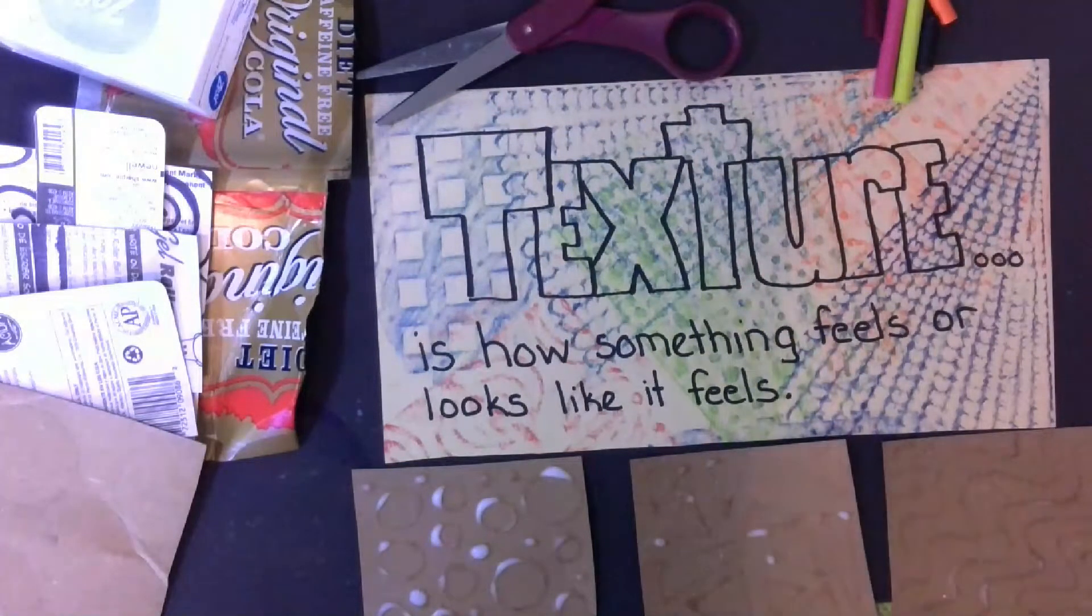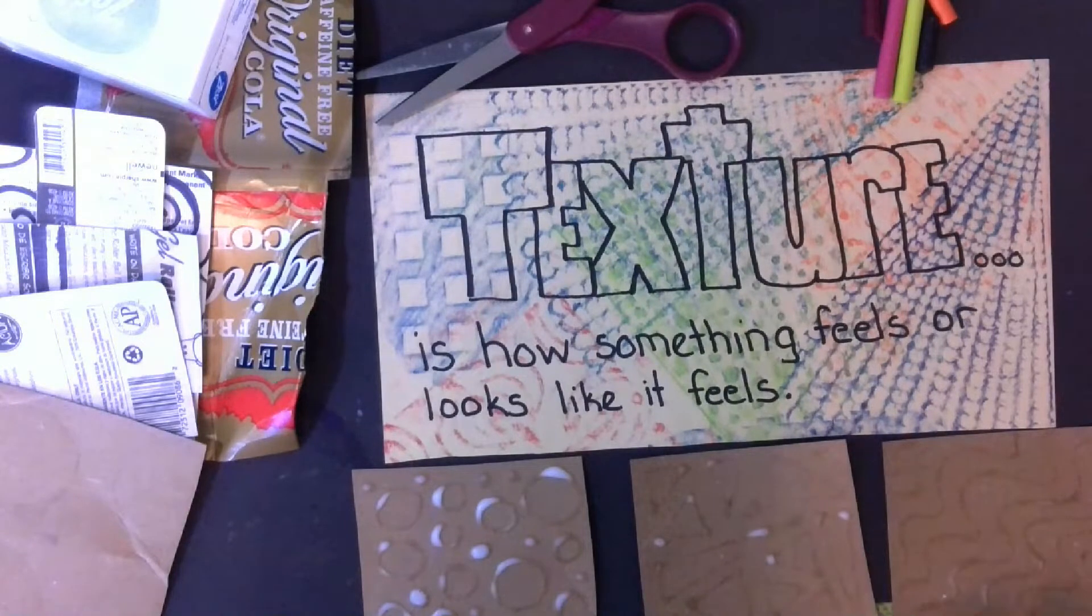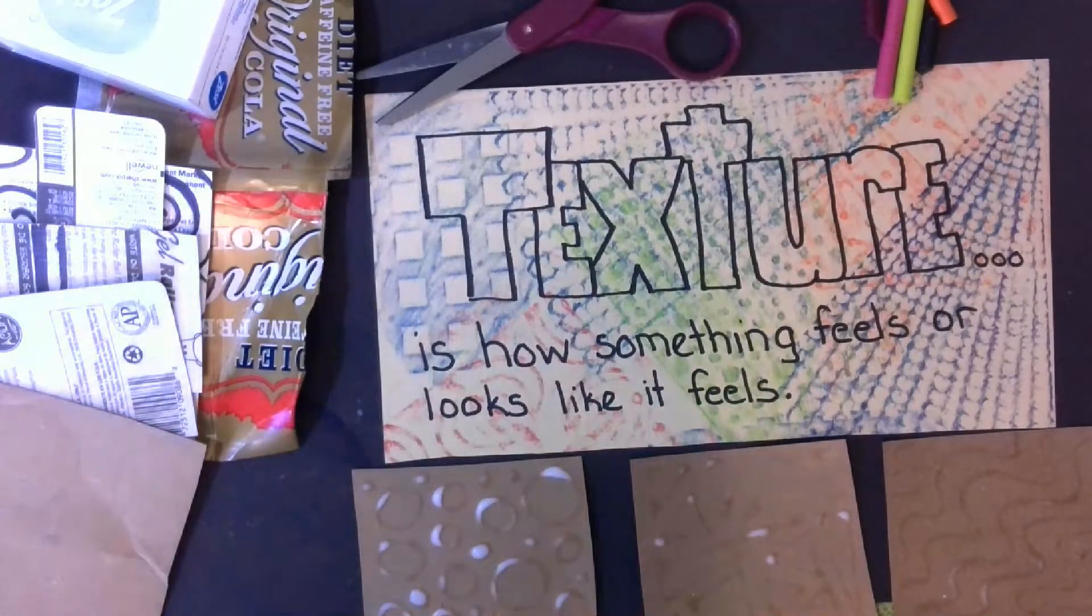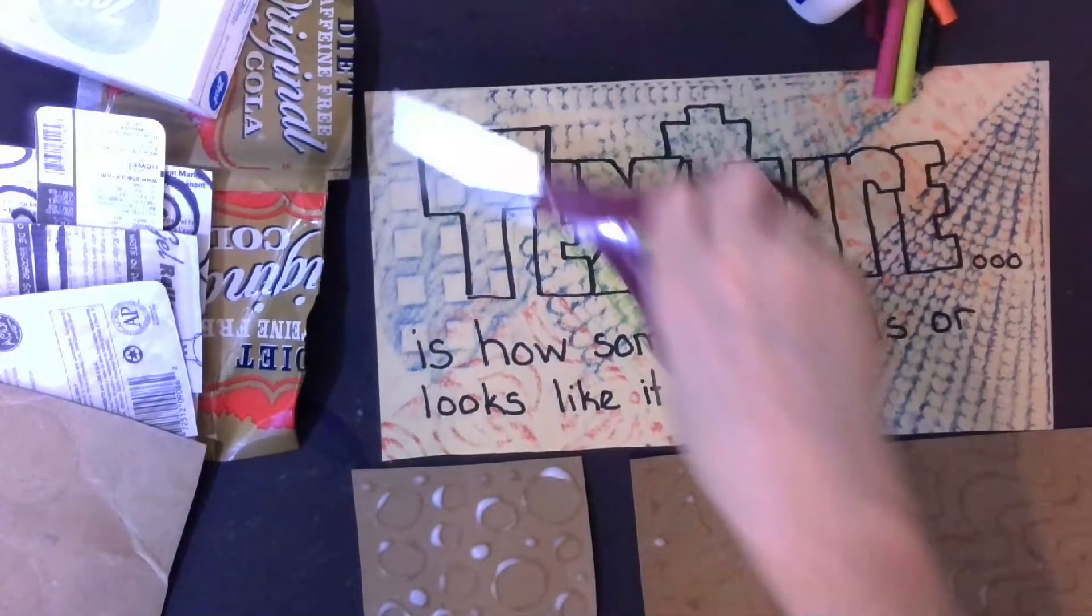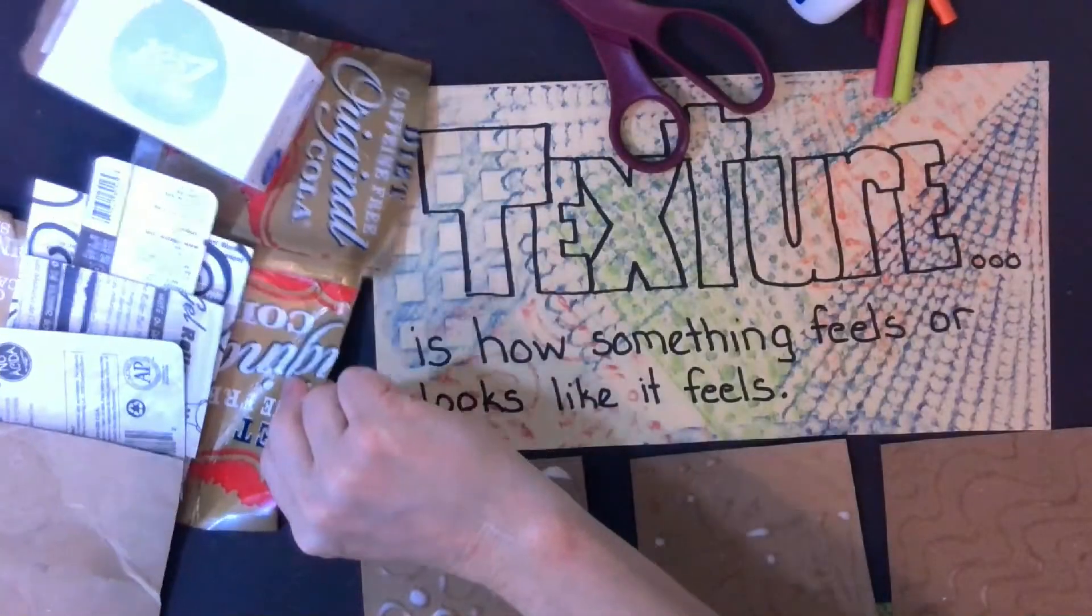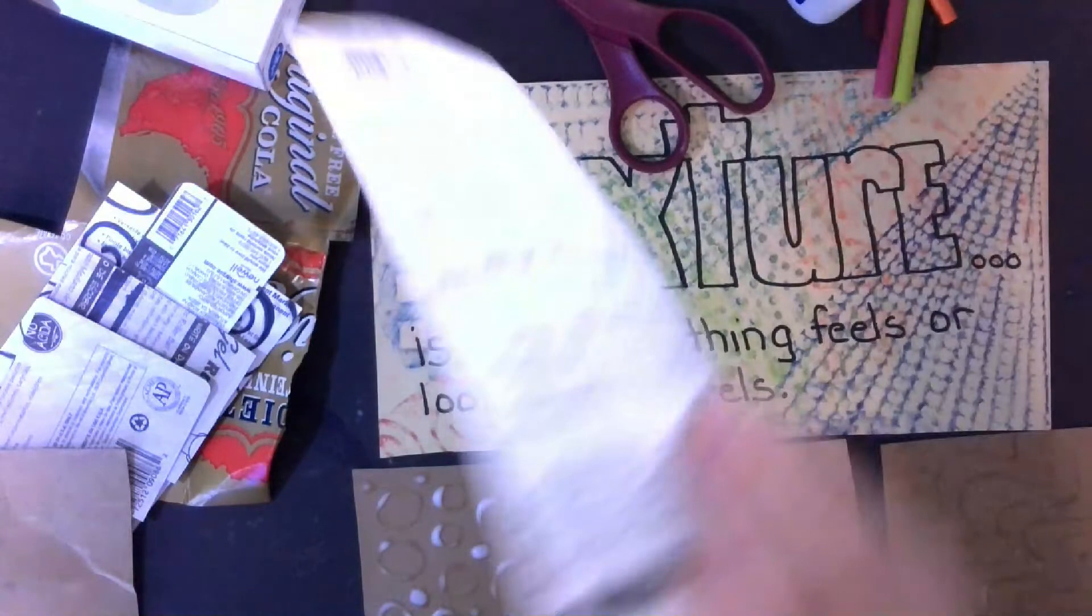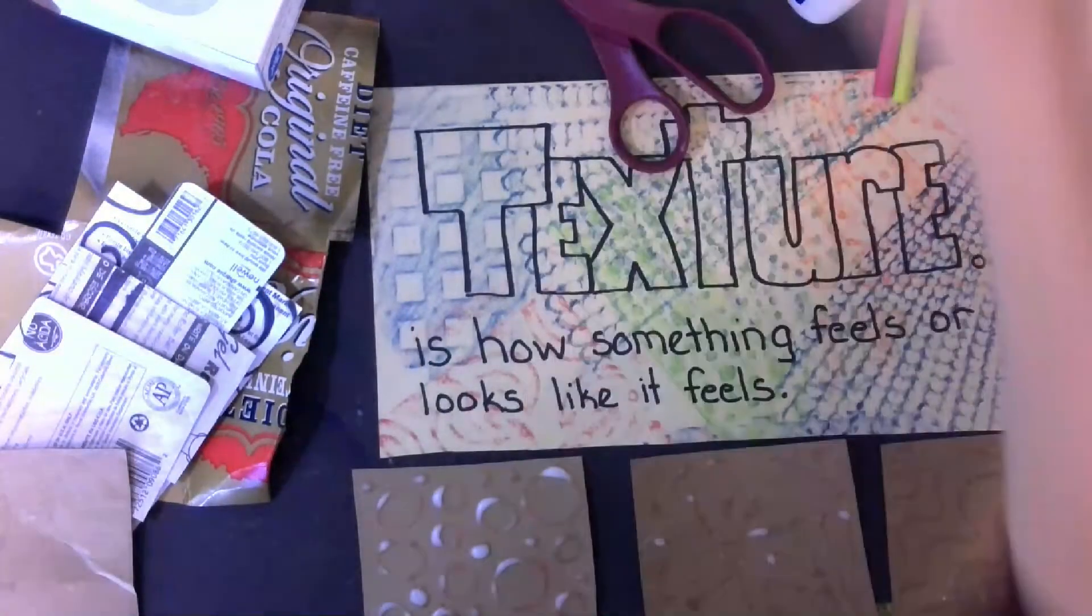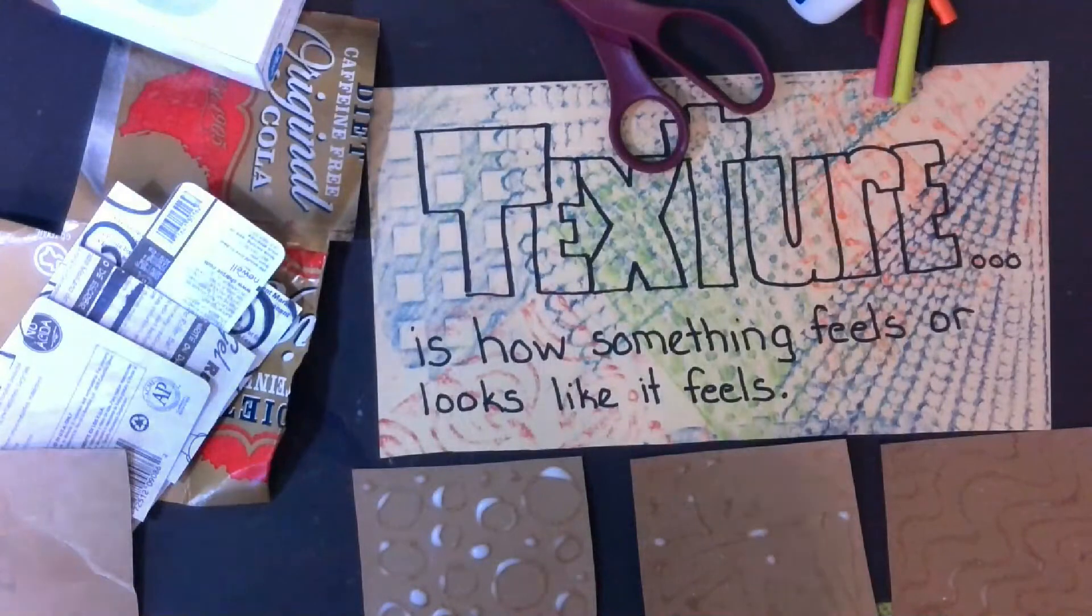But if you don't have access to a lot of stuff, you can make your own. We're going to talk about some things you can go around and find to create texture rubbings with. And all you really need is glue, scissors, some old boxes, whether it's soap, the back of any of these art supplies that's not too thick, poster board, Kleenex boxes, cereal boxes.